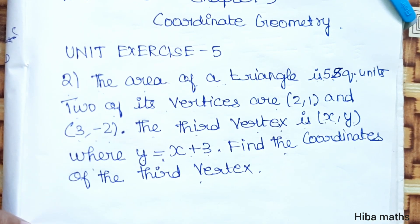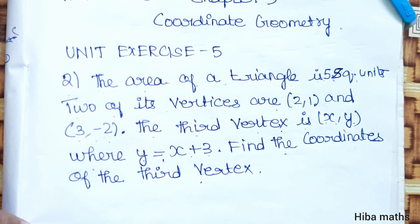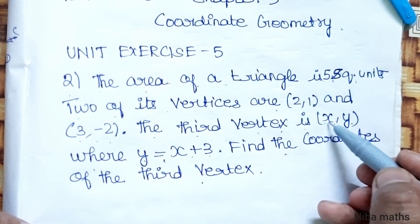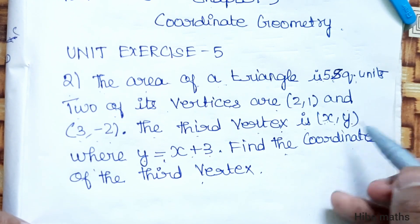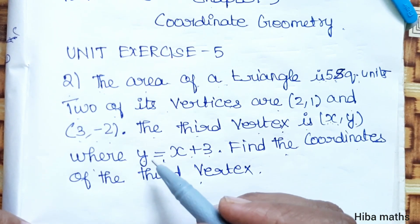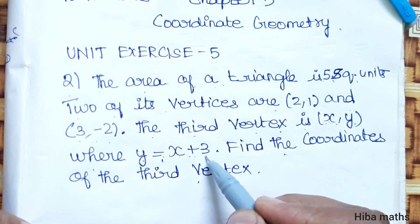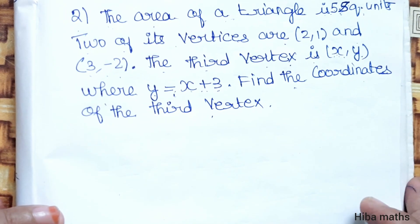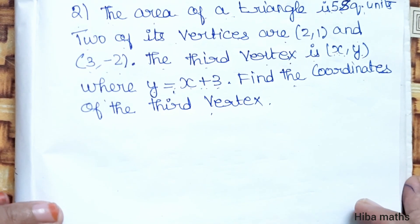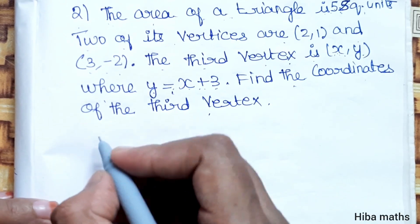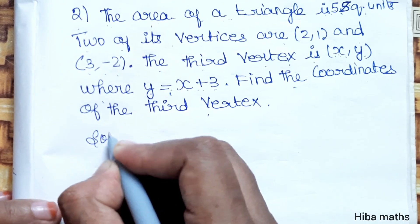So we have a triangle with 2 known points and we need to find the area. Since y is equal to x plus 3, we can use the substitution method. We will use the area of triangle formula to find the third vertex.